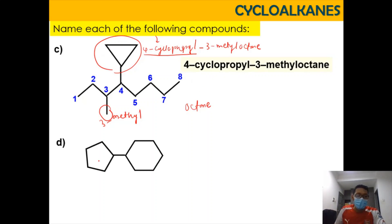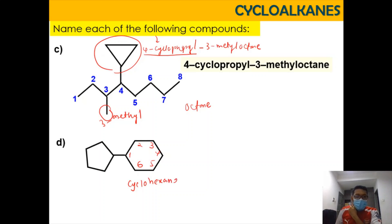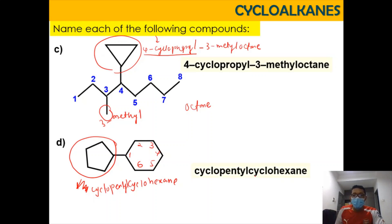For the last example D, we have two cycloalkane rings attached together. The larger ring has 1-2-3-4-5-6 carbons, making it cyclohexane as the parent. Because there is only one substituent, no position number is needed. The substituent is cyclopentyl, so the name is cyclopentylcyclohexane.